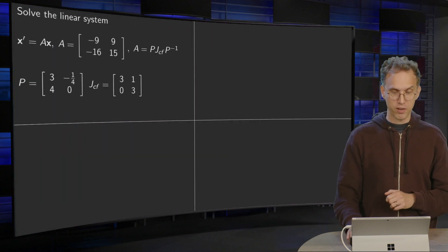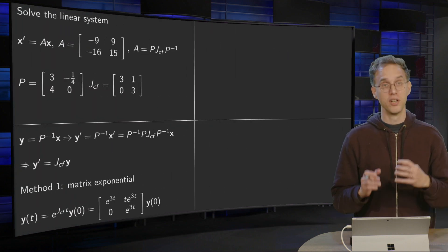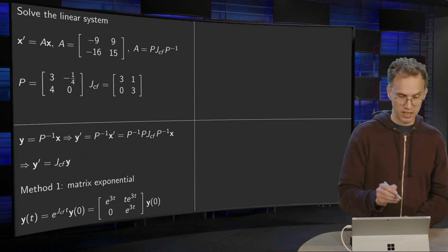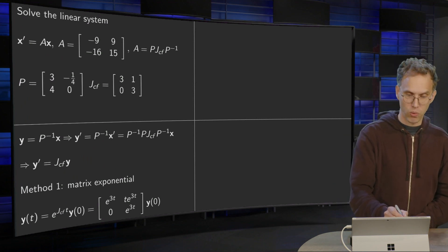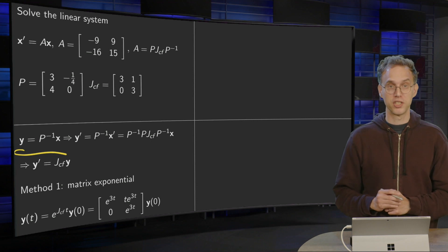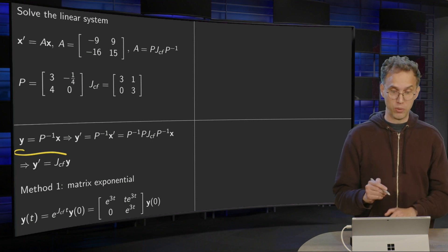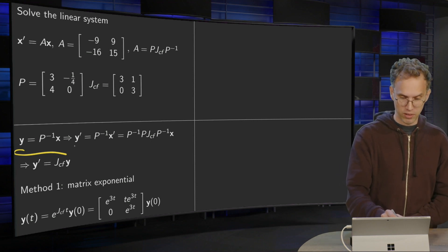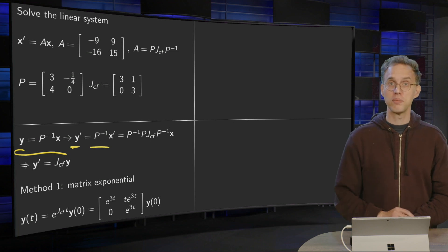So how are we going to solve the differential equation? We use a familiar trick. We use a new coordinate, y equals P inverse times x. Why do we do that? Well, differentiate, you get y' equals P inverse times x'.